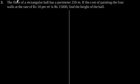Exercise 13.1 Question number 3. The floor of a rectangular hall has a perimeter of 250 meters. If the cost of painting the four walls at the rate of Rs 10 per meter square is Rs 15,000, find the height of the hall.